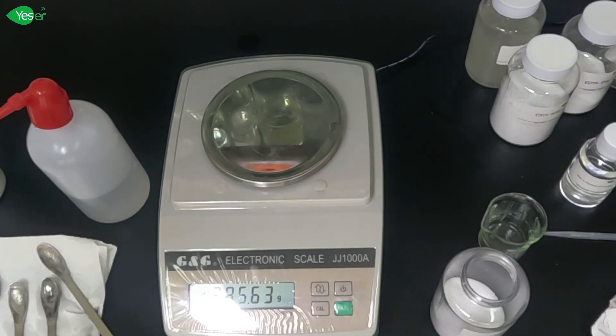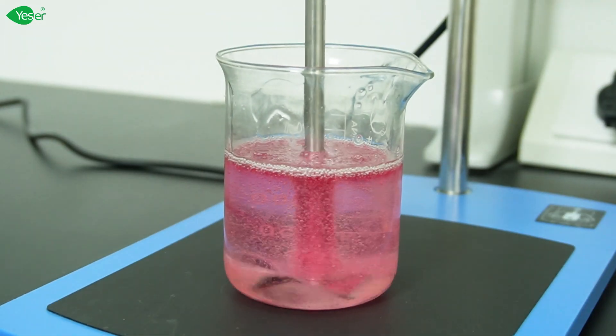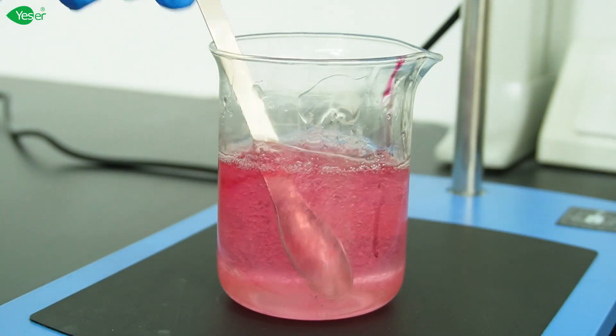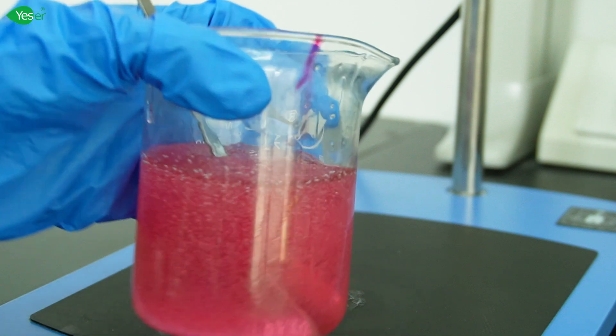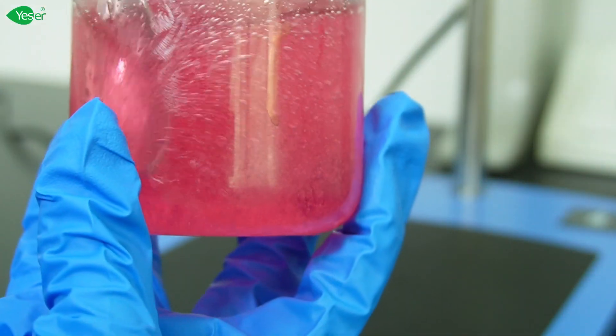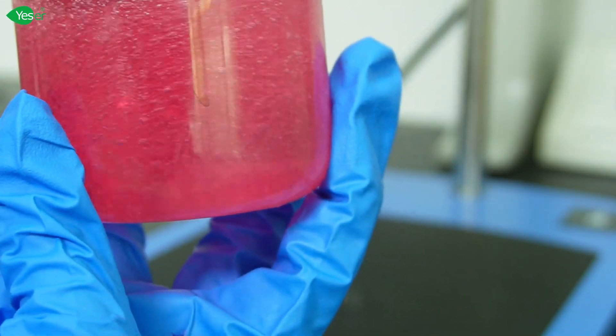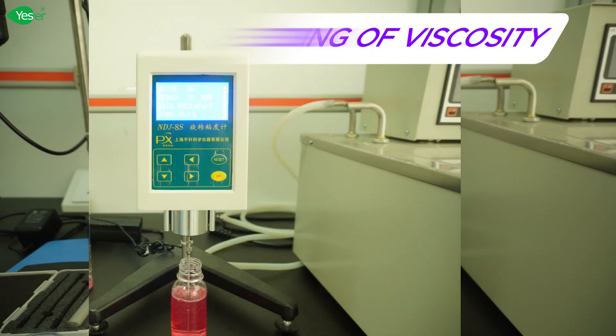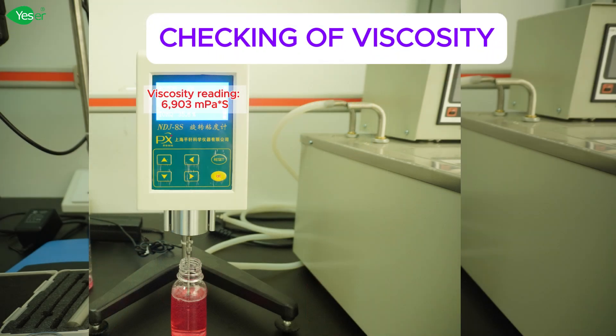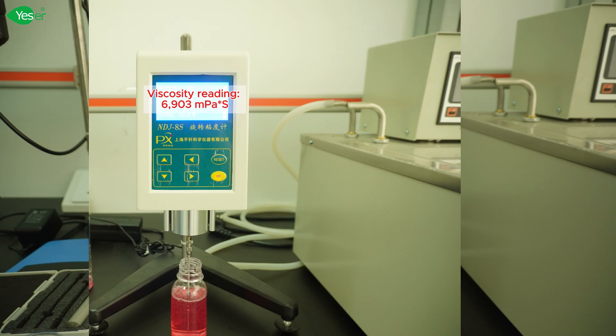Now we can add our dye for our formula. And now our transparent moisturizing body wash is finished. Now that we have finished our formulation and have cooled it down, we check our viscosity and it reaches 6900 millipascals.